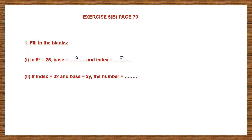Next one: if the index is 3x, that means the power, and the base is 2y, then what is your number? So remember base is 2y and this is raised to the power of 3x, index is 3x. So this is the exponential form — you write the number as 2y raised to the power of 3x.